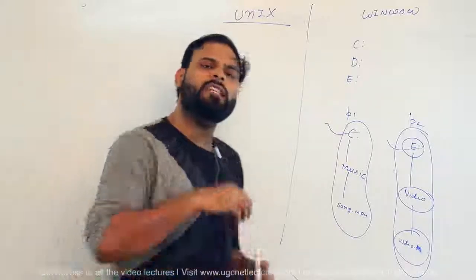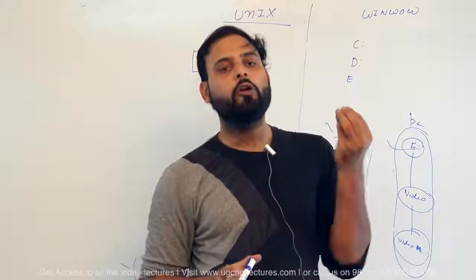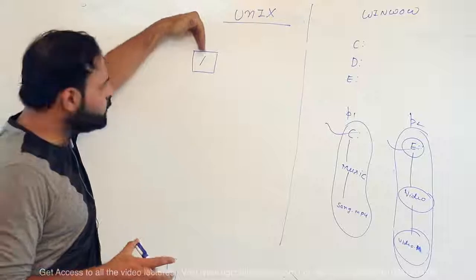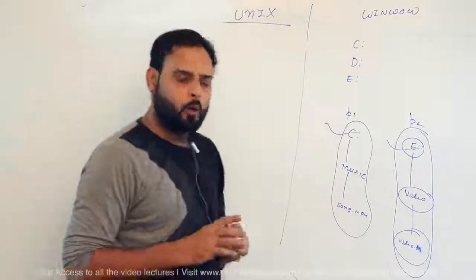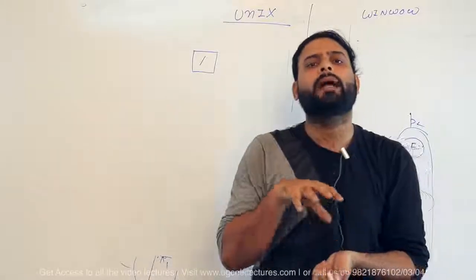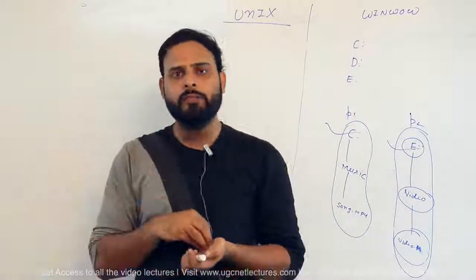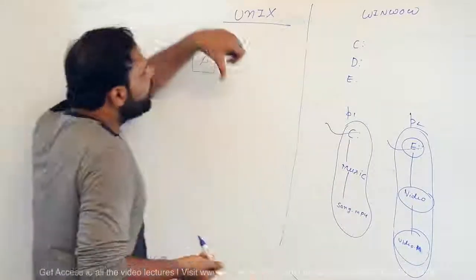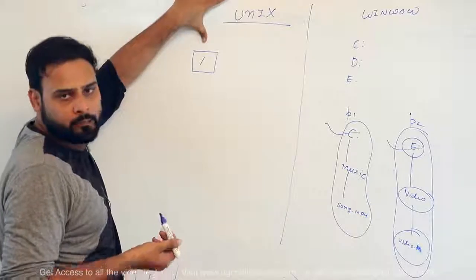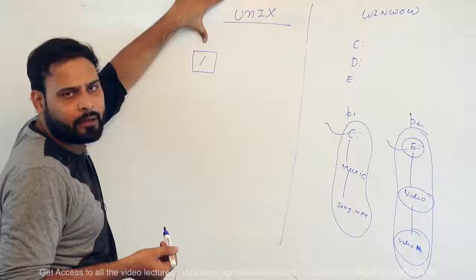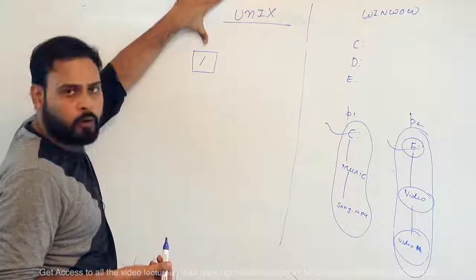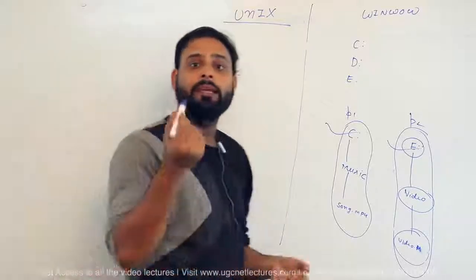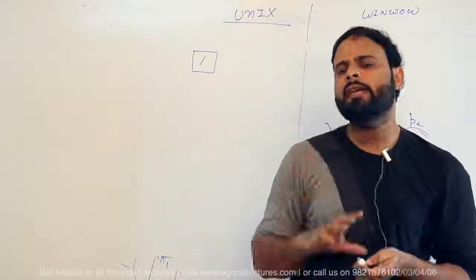In UNIX, if I want to search any file, I have to start from root. What is root? Root is the god or super user of that operating system. Each and every file stored in the system is arranged in a tree configuration, and the parent of that tree is root. In Linux and UNIX, the file system is stored in a tree structure with root as the parent.